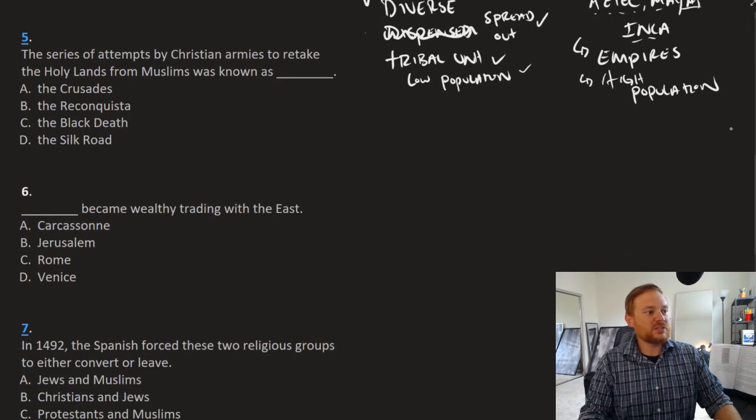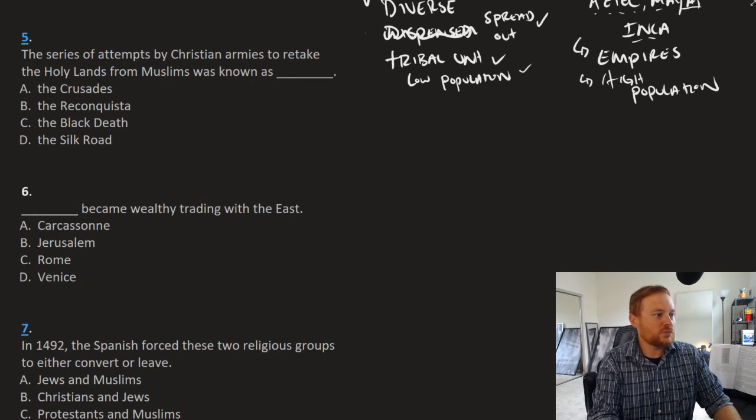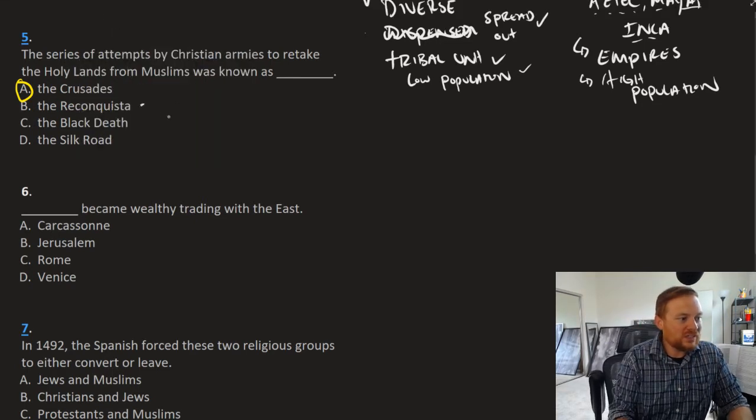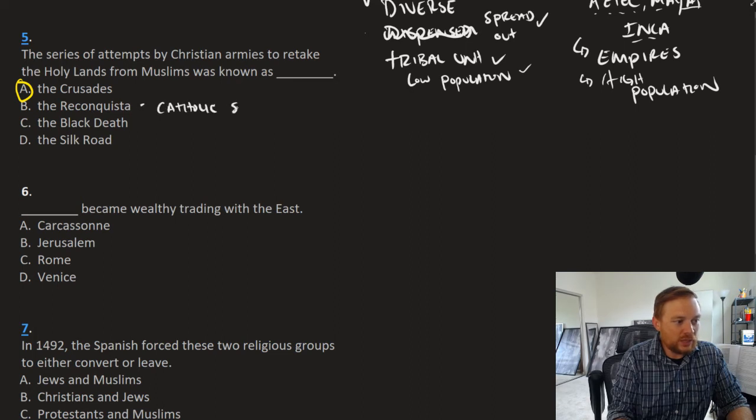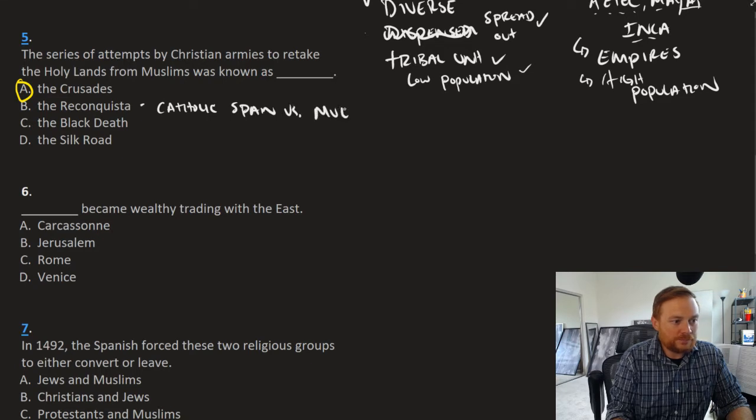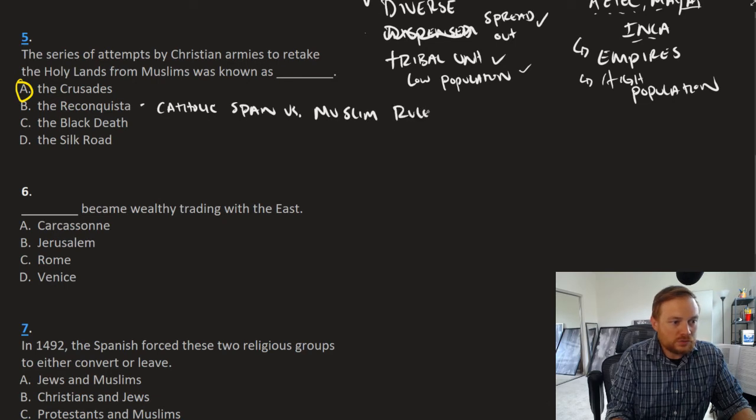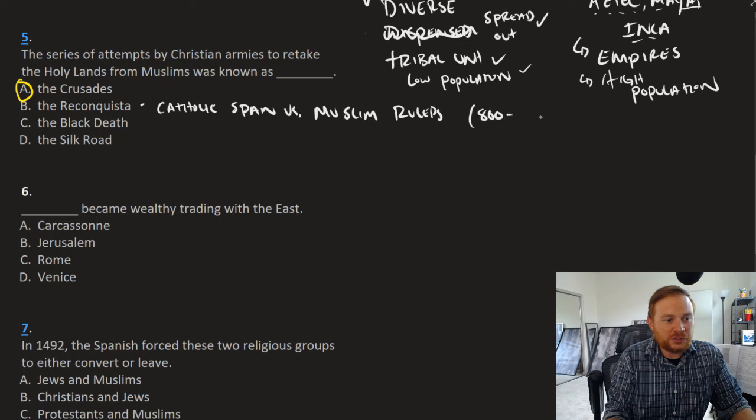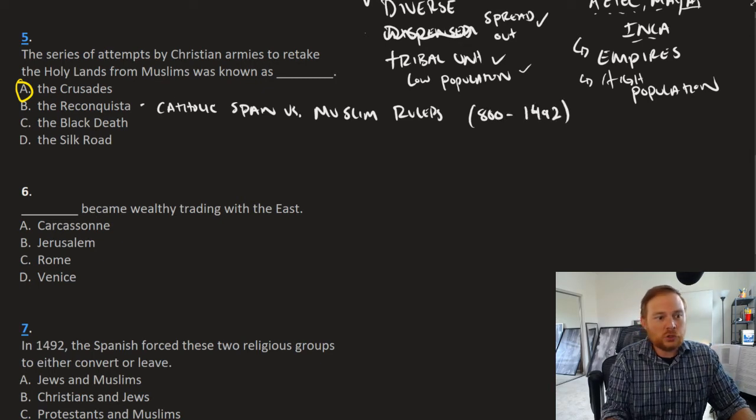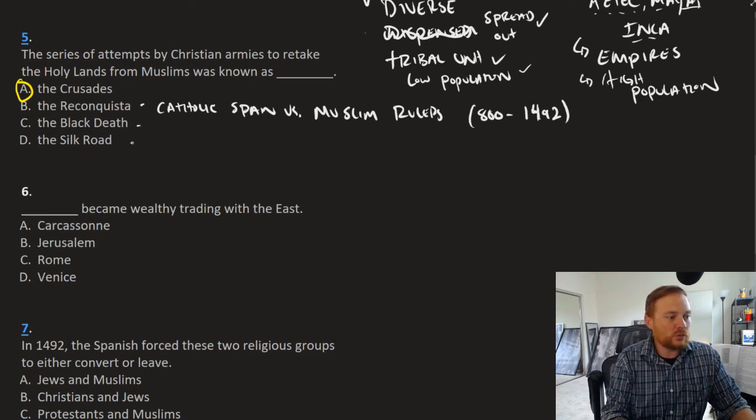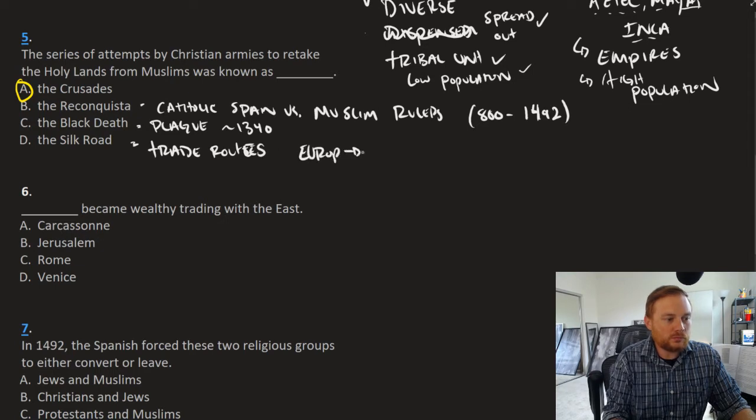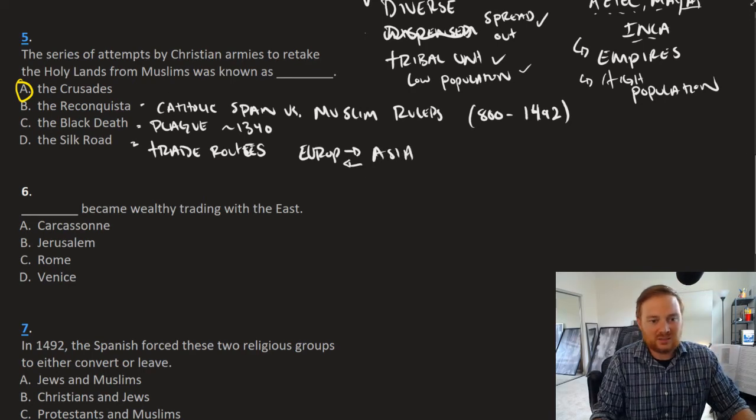Question number five, the series of attempts by Christian armies to retake the Holy Lands from the Muslims was known as, and the answer to this one is the Crusades. A couple of these other answer choices that we got here, the Reconquista. This was Catholic Spain versus Muslim rulers. And this stretched roughly from 800 to 1492. It was a very, very long, slow war in Spain between Catholics and Muslims. The Black Death, of course, this is the plague in Europe, roughly 1340. The Silk Road are trade routes between Europe and Asia. Trade routes between Europe and Asia. So those are not the right answer choices.